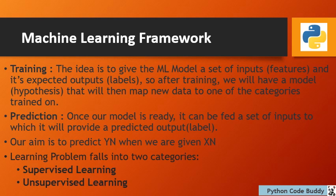Training forms an important part of the machine learning framework. The idea is to give the machine learning model a set of inputs and its expected outputs, such that after training we will have a model that maps new data to one of the categories trained on. The last part of the machine learning framework is prediction — once our model is ready, it can be fed a set of inputs to which it will provide a predicted output.